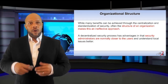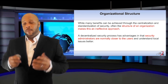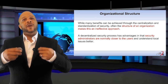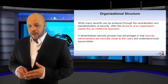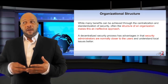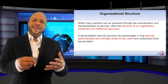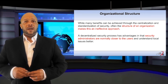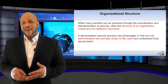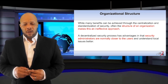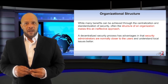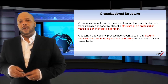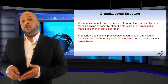Next is our organizational structure. The structure of an organization can be a liability as well as an asset. Often, the structure of an organization makes it ineffective for us to implement our security strategies. You generally have two to choose from: either centralized or decentralized. There are many advantages to having a centralized standardization of security; however, the structure of an organization usually makes this a very ineffective approach because we're so spread out. That's where decentralized security comes in — the security administrators are normally closer to the end users and absolutely better understand the local issues than anyone across the country or across the world.